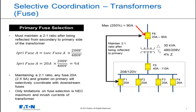Selecting the primary fuse, fuse F6, must address the different voltage levels between the secondary and primary of this transformer. To maintain the 2 to 1 ratio, we reflect the secondary TCF 20 amp fuse to the primary via the turns ratio. The 20 amp secondary fuse is calculated as a 9 amp primary fuse by multiplying 20 amps by the secondary voltage and dividing by the primary voltage. To maintain the 2 to 1 ratio, fuse F6 must be greater than or equal to 2 times 9 amps, which is 18 amps. The next standard fuse size is 20 amps, so fuse F6 can be 20 amps or greater, up to the NEC maximum of 90 amps.